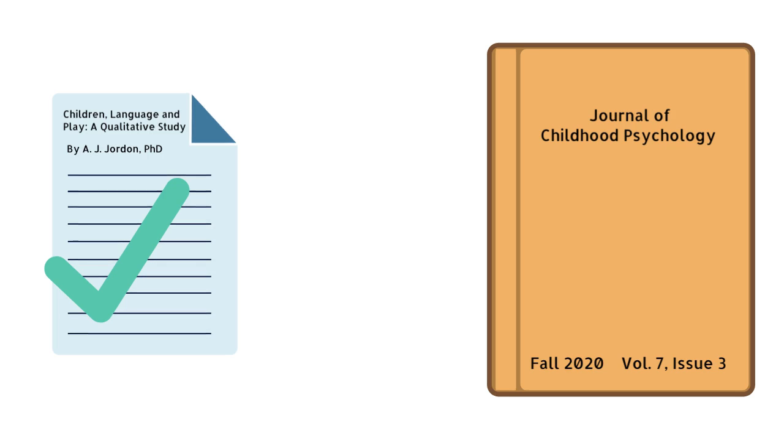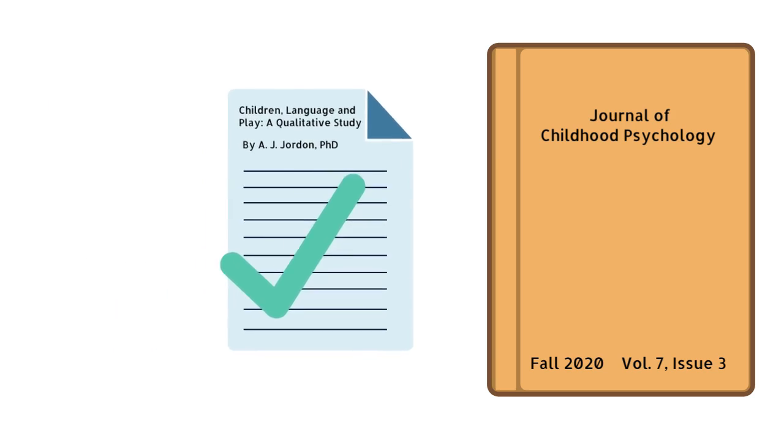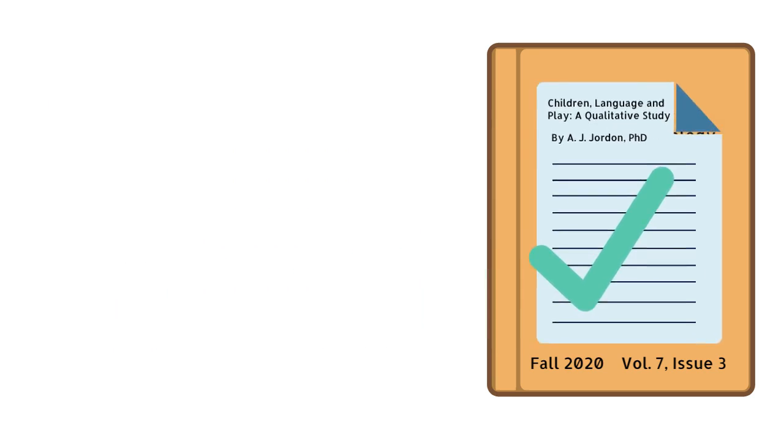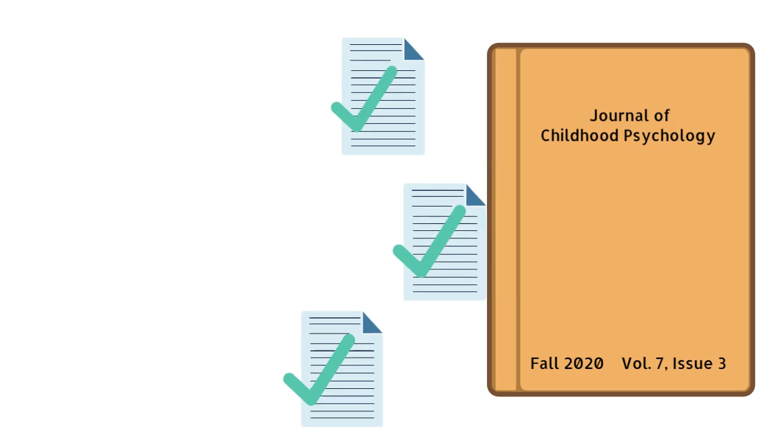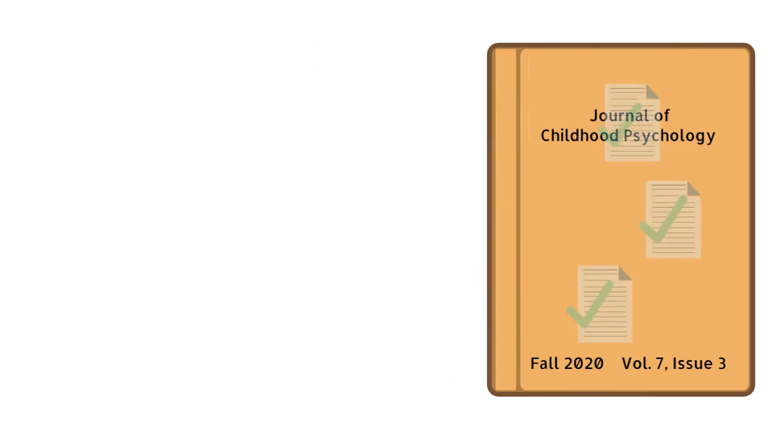This process might go back and forth several times until the paper meets the standards acceptable for academic scholarship. When Professor Jordan's paper is fully accepted, it is published in the journal that has peer-reviewed it, along with other peer-reviewed papers by scholars in the same field.